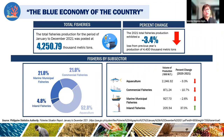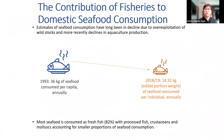Regarding the blue economy, the total fisheries production for January to December 2021 was posted at 4,250.79 thousand metric tons. Fish production exhibited a reduction of about 3.4 percent from the previous year. There is a declining trend in production. The contribution of fisheries to domestic seafood consumption has declined from 1993 to 2018 according to the National Nutrition Survey. Most food is consumed fresh, with processed fish and mollusks accounting for a smaller proportion.